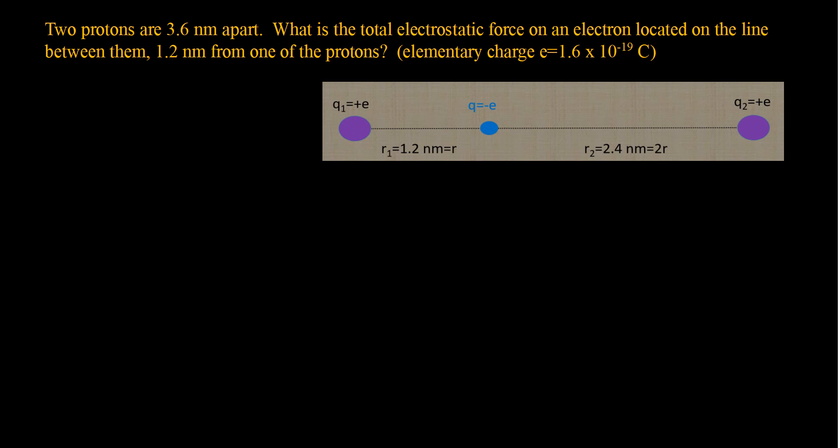To solve this, I need to first calculate the electrostatic force generated by the first proton on the electron, then calculate the electrostatic force generated by the second proton on the same electron, and finally find the total or net electrostatic force acting on this electron, including its direction. Let's begin using Coulomb's formula.